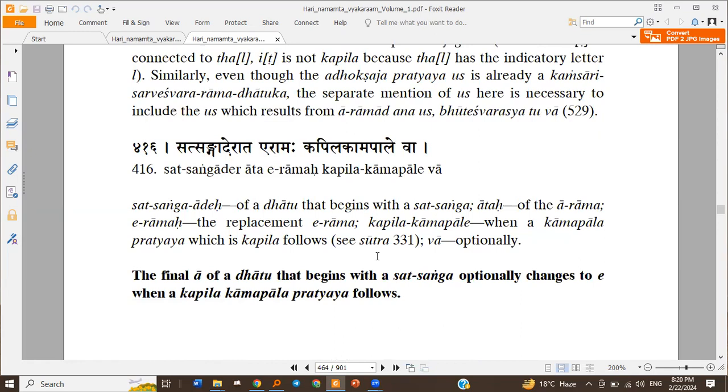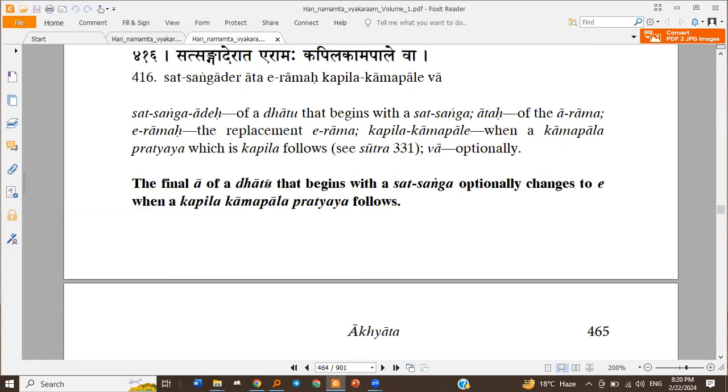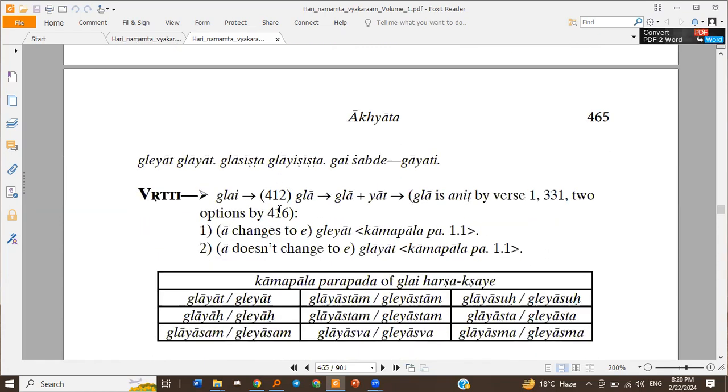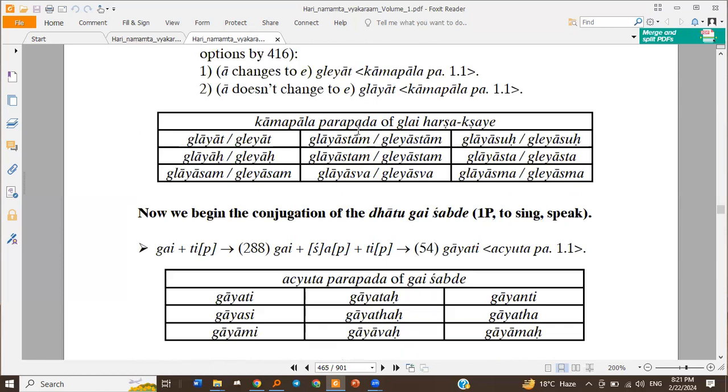Then Satsanga Aade Rata E Ramaha Kapila Kamapale Va - the final A of a Dhatu that begins with the Satsanga optionally changes to A when a Kapila Kamapala pratyaya follows. So the Kamapala pratyaya is Kapila. Glah plus Yath, so optionally this A in the Dhatu which is beginning with the Satsanga, this A optionally becomes A, so we get Gleyat or Glahyat.